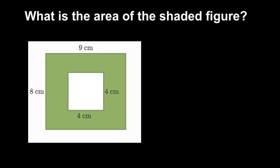So let's start by finding the area of this larger rectangle, and to do that we can look at the side lengths. It has side lengths of nine and eight. To find area of a rectangle, we can multiply the side lengths.